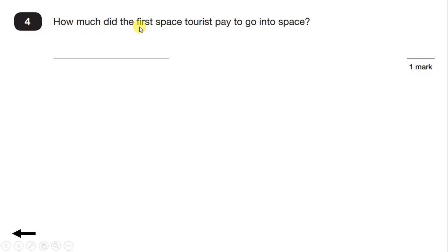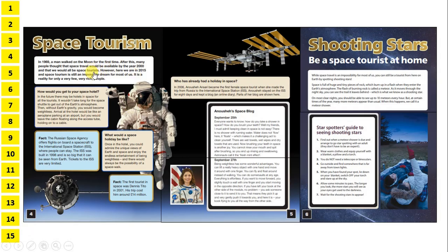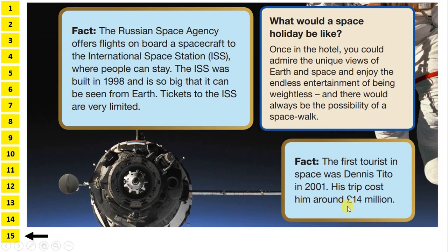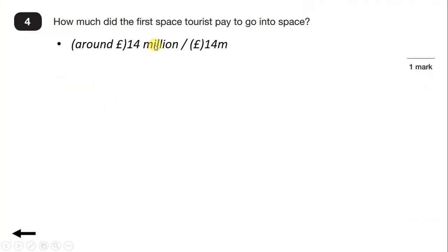Question 4: How much did the first space tourist pay to go into space? We can scan the text looking for an amount of money. We can see a pound sign — 'Fact: the first tourist in space was Dennis Tito in 2001. His trip cost him around 14 million pounds.' So we can write '14 million' or 'around 14 million pounds'.